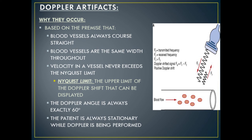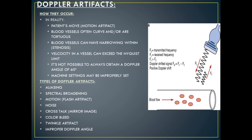Our last category of ultrasound artifacts are Doppler artifacts. These occur when using color, power, or spectral Doppler, based on the premise that blood vessels always course in a straight line, are the same width throughout, and velocity in a vessel never exceeds the Nyquist limit — the upper limit of the Doppler shift that can be displayed. These also occur based on the premise that the Doppler angle is always exactly 60 degrees and the patient is always stationary. In reality, patients move (motion artifact), blood vessels are curvy and tortuous, vessels can have narrowing (stenosis), velocity can exceed the Nyquist limit, a Doppler angle of 60 degrees isn't always obtainable, and machine settings can be improperly set.